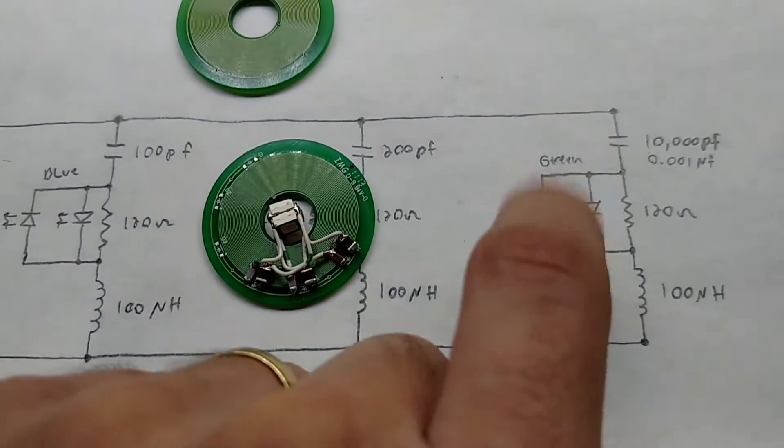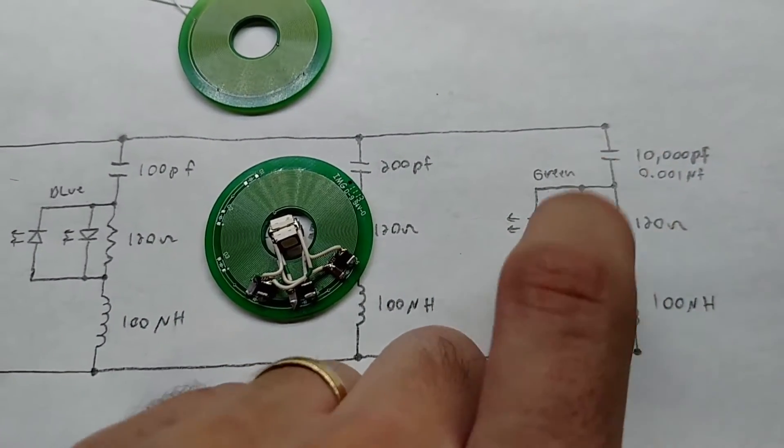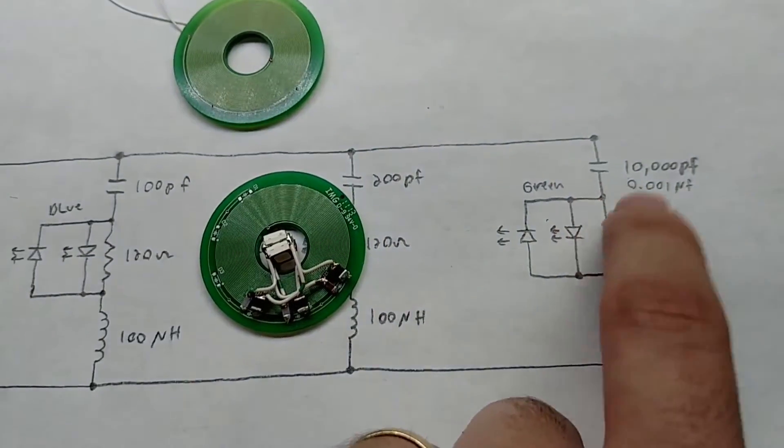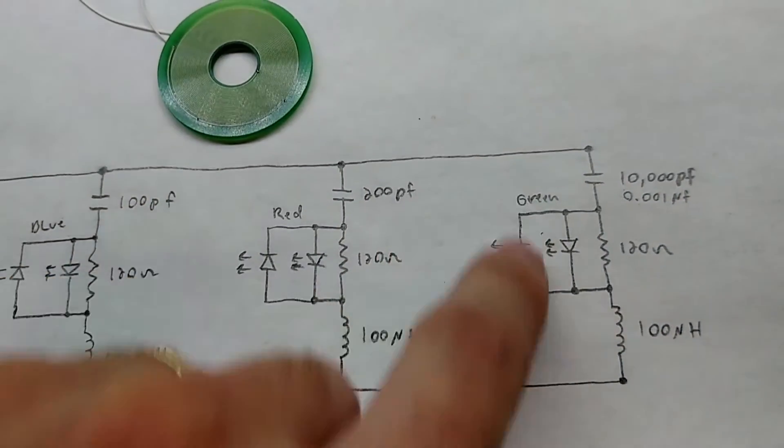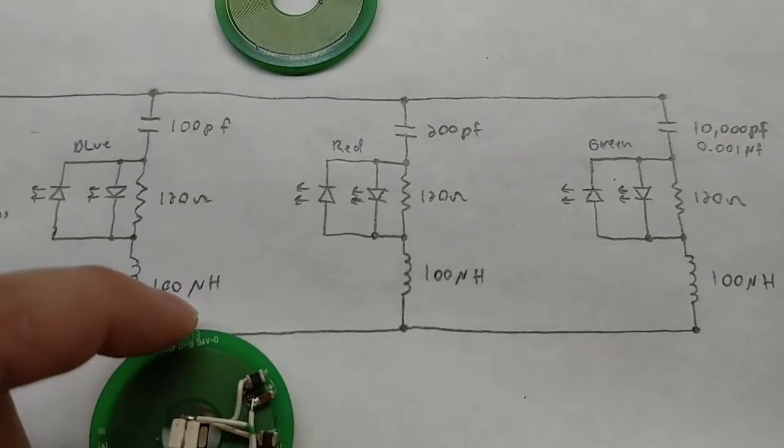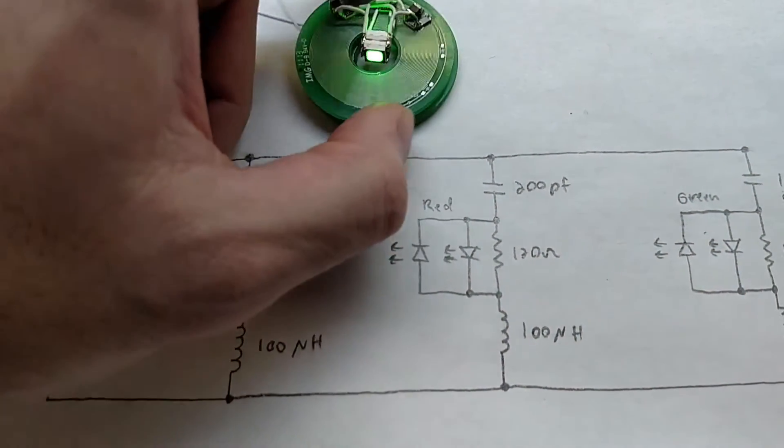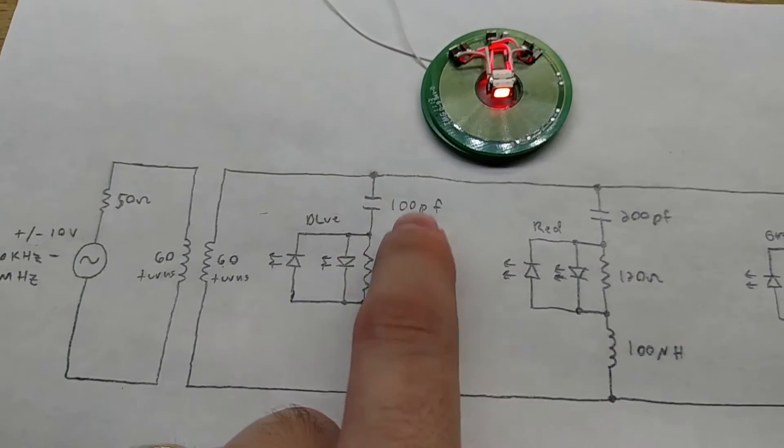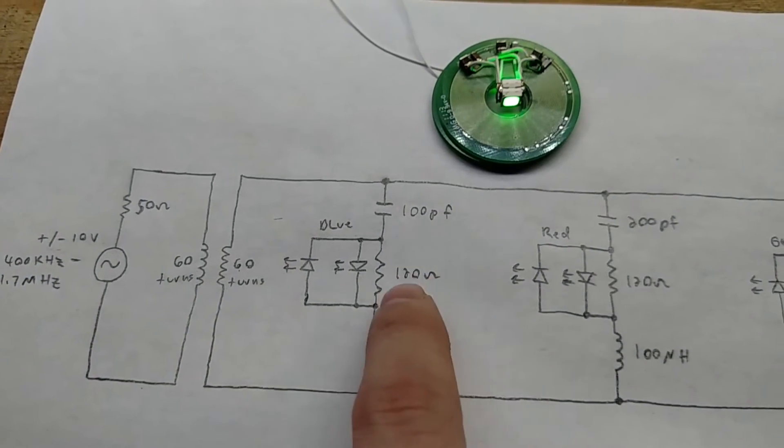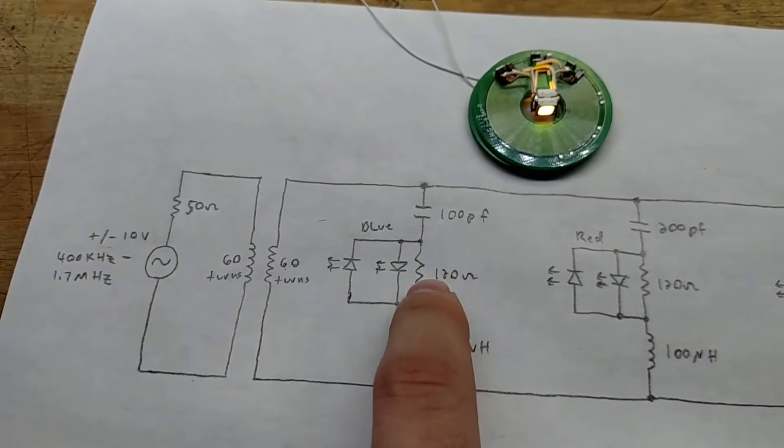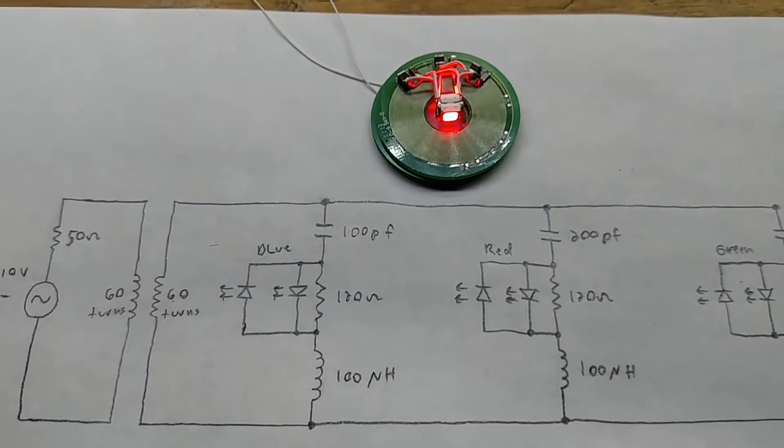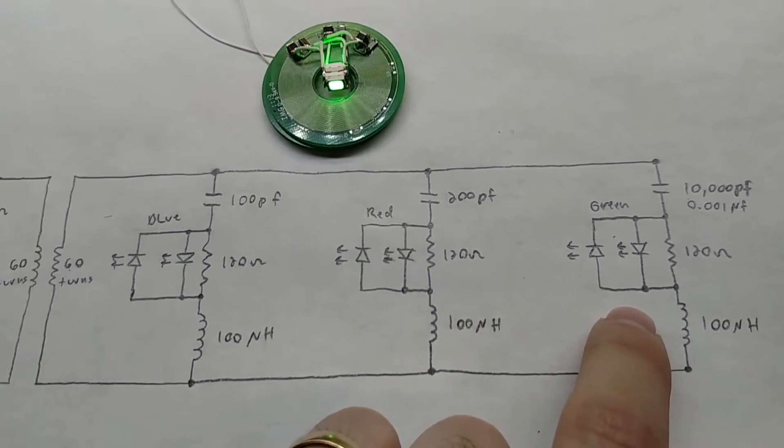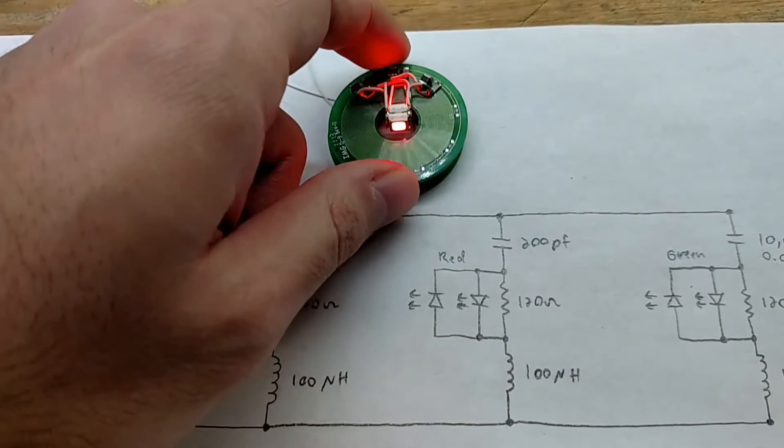I'll show you why we didn't do 100, 200, and 400. The lower the frequency we get, the narrower the notches. All of these are essentially notch filters or bandpass filters. We're only letting specific frequencies through. To turn on the blue one, we run at 1.7 megahertz or 1.6 megahertz. The red is around 1.2 megahertz, and the green is around 500 kilohertz.